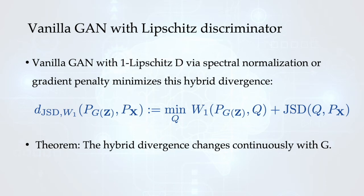We further discuss the application of our duality framework to Vanilla GAN with a Lipschitz discriminator. In this case, we show that we are minimizing a hybrid of first-order Wasserstein distance and Jensen-Shannon divergence, which changes continuously with G. This is unlike Jensen-Shannon divergence but similar to Wasserstein distance, and this is desirable for training GANs.